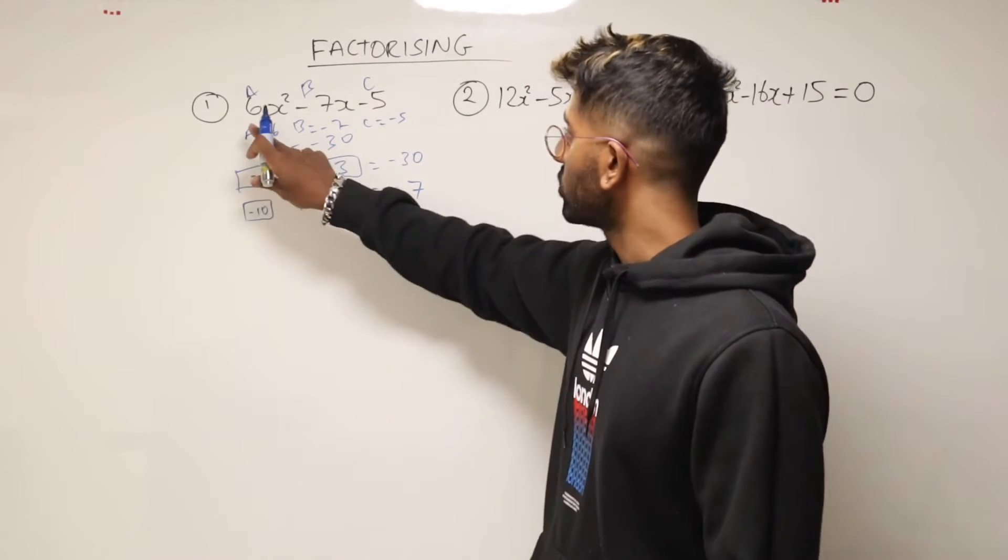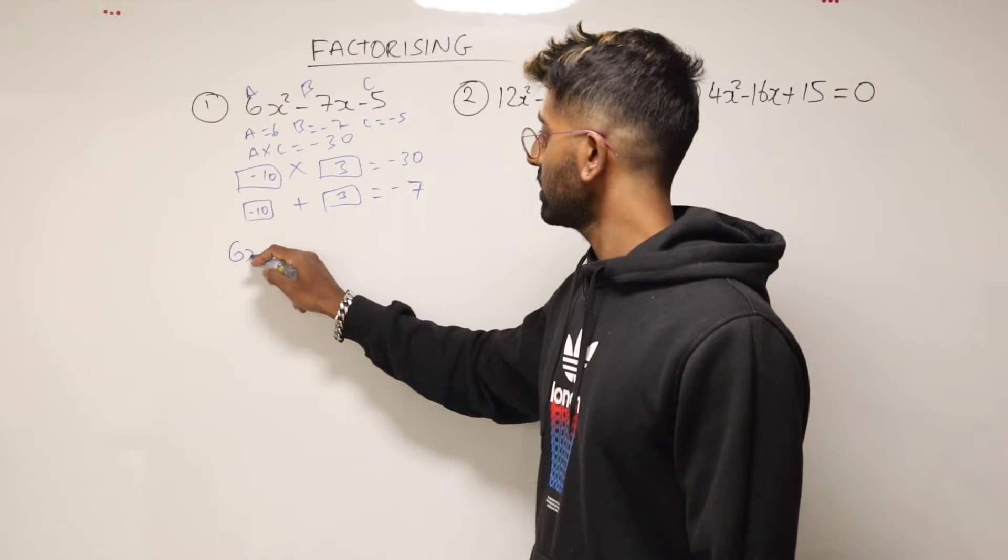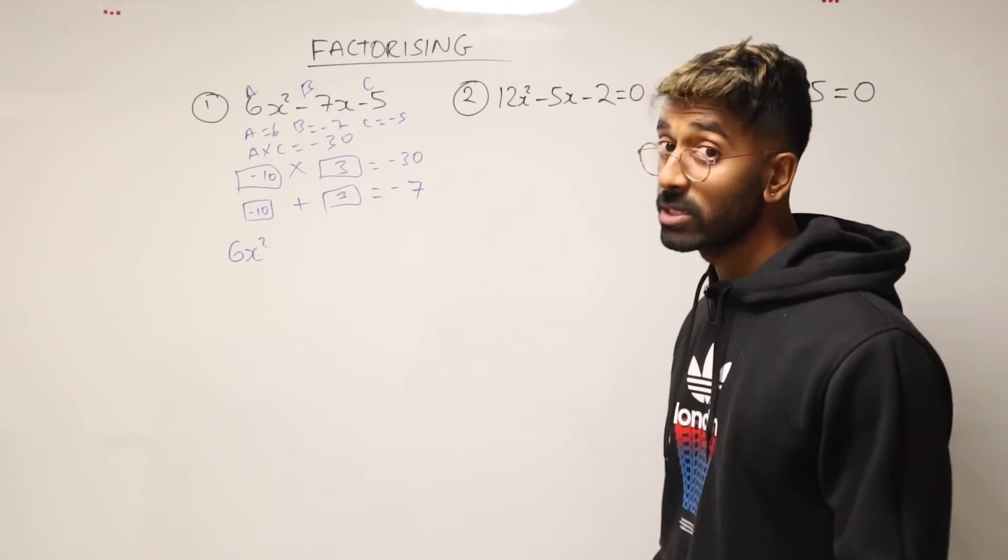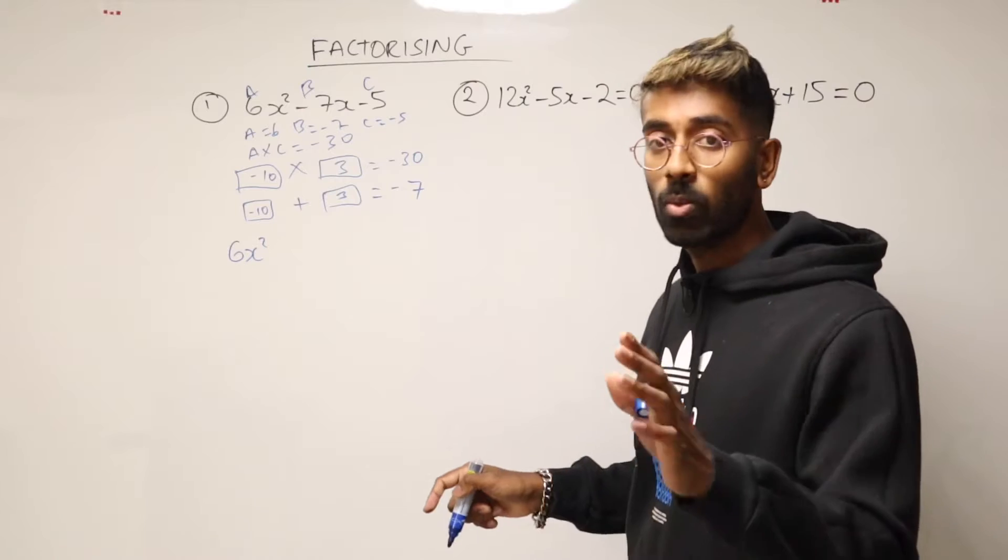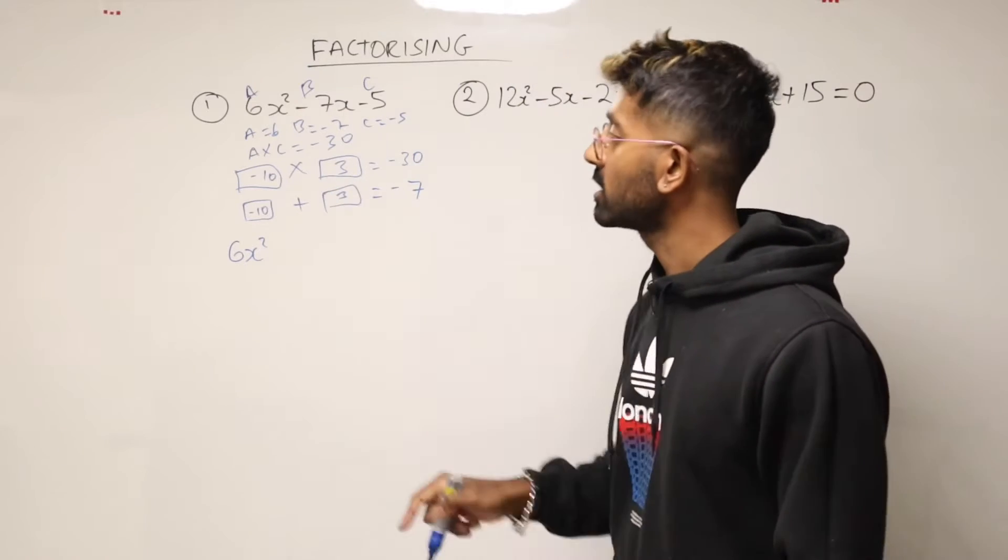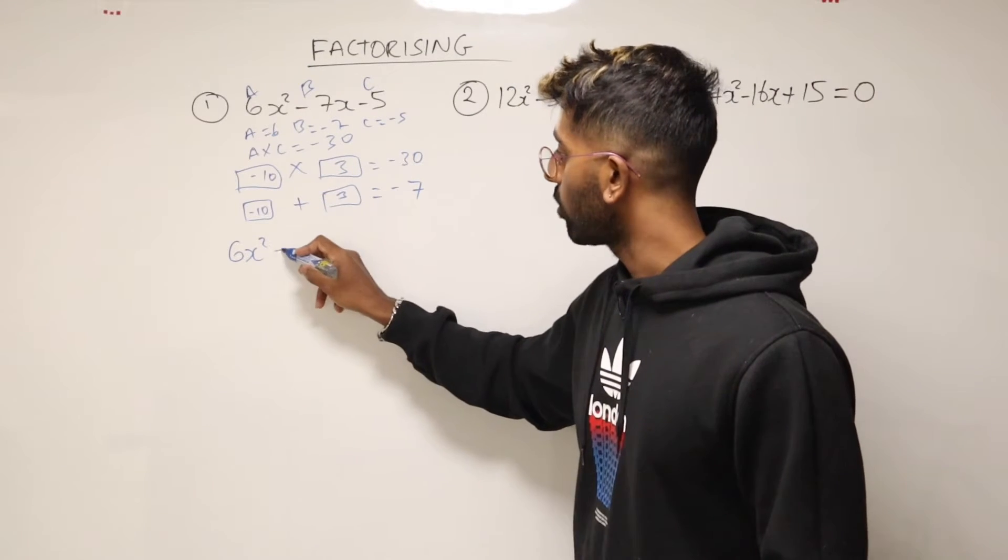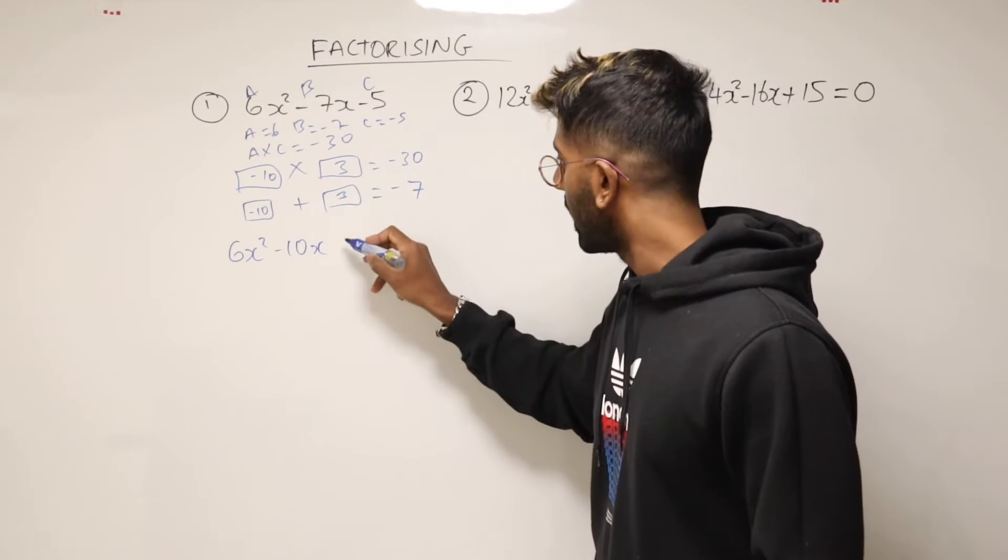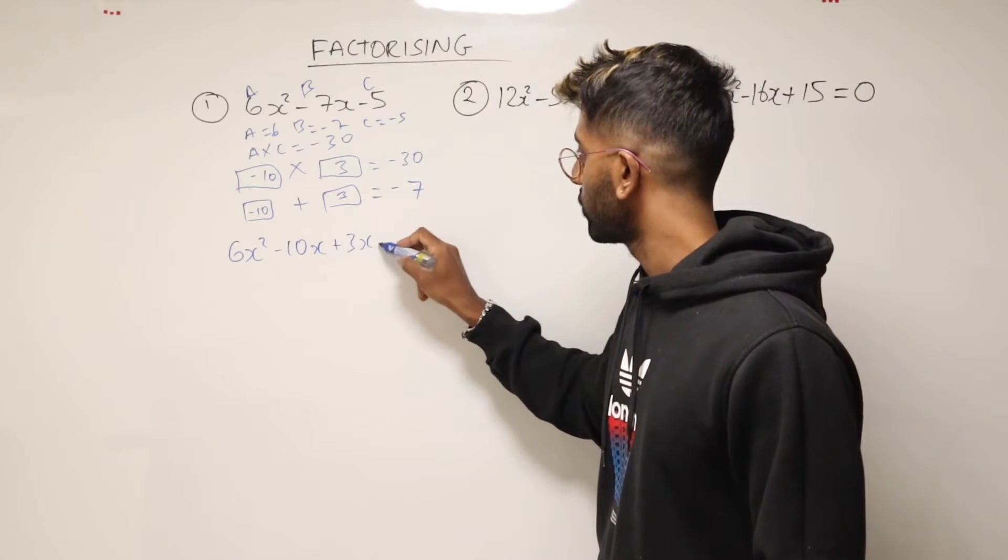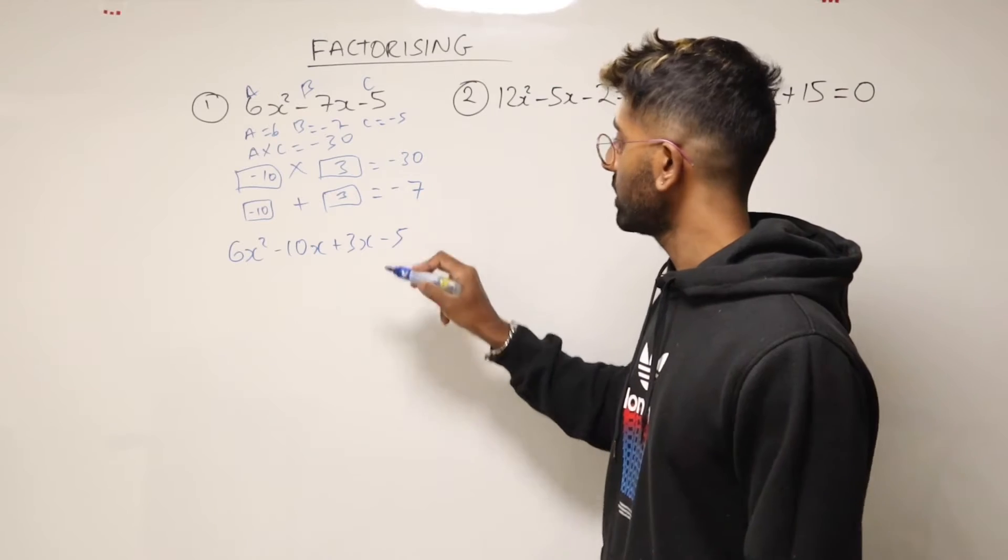So what we need to do is rewrite our quadratic. So we're going to have it as 6x squared. But now instead of writing minus 7x, what I do is use the two numbers that I came up with. So I write minus 10x and then plus 3x and then minus 5.